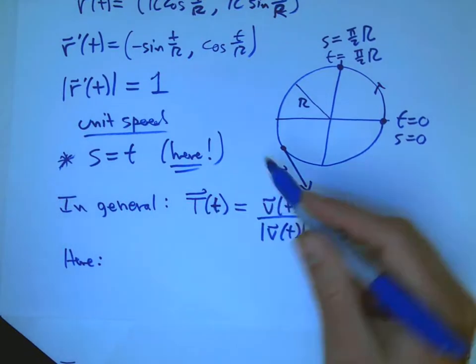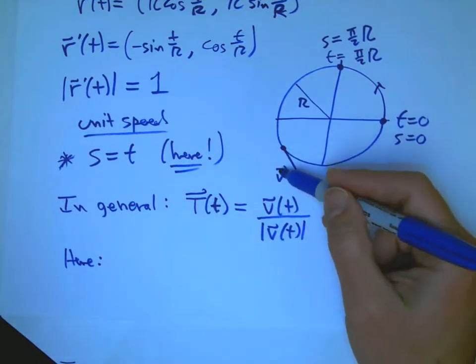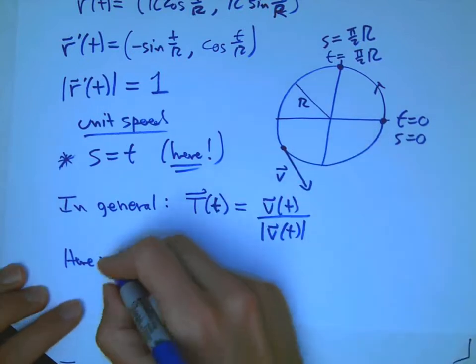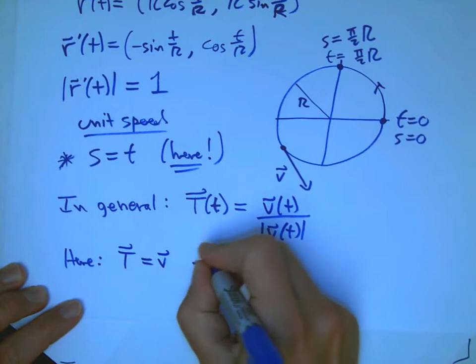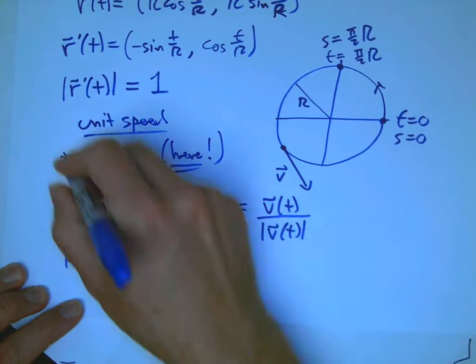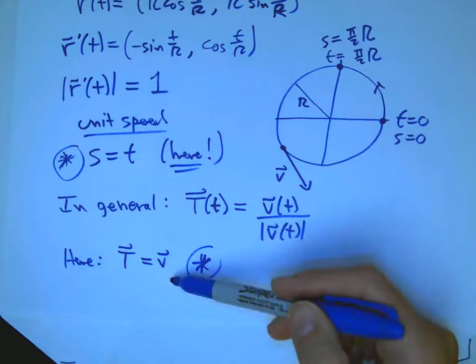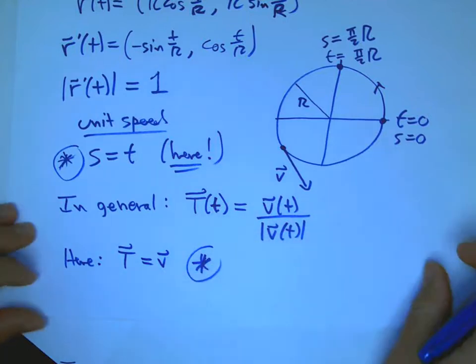And for a unit speed curve, if you calculate the velocity, that's already a unit vector. It's going to be equal to this unit tangent vector. So I'll put another star by that. These two stars are things that are definitely not true in general, but are true here and are going to make the calculations really easy.